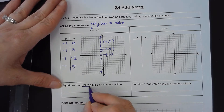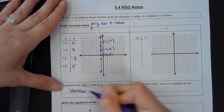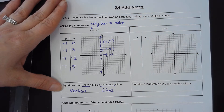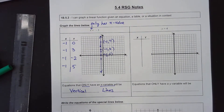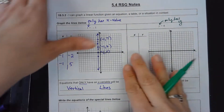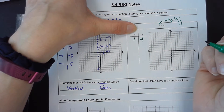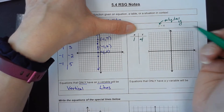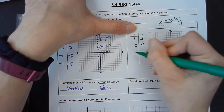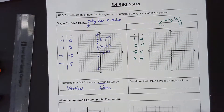Equations that only have an x variable will be vertical lines. Something unusual is also going to happen when you only have one letter over here — this equation only has a y. Let's make some points, but I have to make sure that y is 4. Can I have 1 comma 4? Sure. I need more points that have a 4 in the y — how about 0 comma 4, negative 2 comma 4, and 6 comma 4.